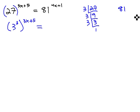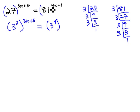Let's factor 81. 81 is divisible by 3 twenty-seven times, which is divisible by 3 nine times, which is divisible by 3 three times, divisible by 3 once. We've got 3 to the 4th power, replacing the 81 with the 4x plus 1 outside of the parentheses.